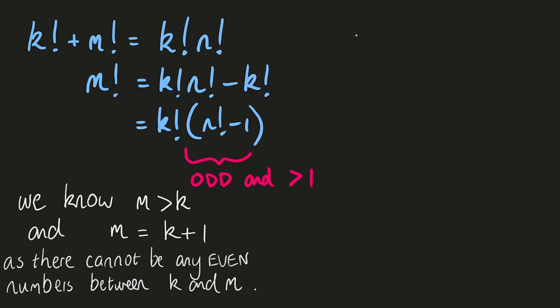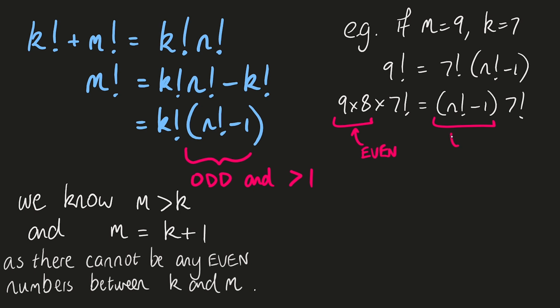Let's say we want to find a solution where m is 9 and k is 7. If we sub that into our equation on the left, we'll see why it won't be able to work. 9 factorial is 9 times 8 times 7 factorial, which means that in this example the n factorial minus 1 would have to be equal to 9 times 8. That can't work because we know it has to be odd, which is a contradiction. There can't be any even numbers that are larger than k and less than or equal to m, which means m must be exactly equal to k plus 1.